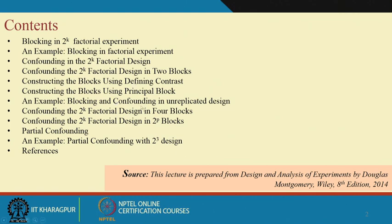The source of this lecture is the book written by Montgomery — Design and Analysis of Experiments. If you go through the chapter on blocking in 2^k factorial design, it is in chapter 7 in this edition.